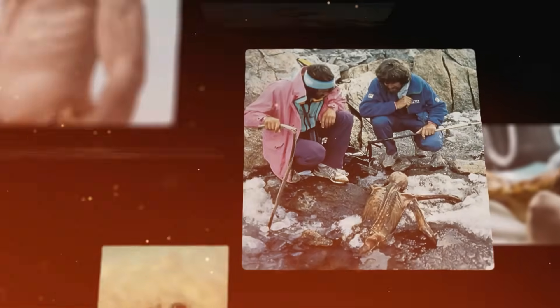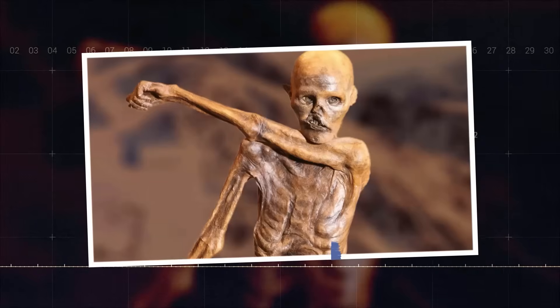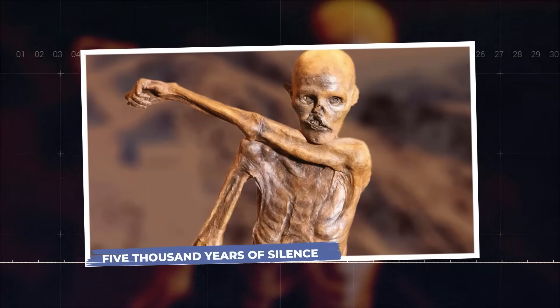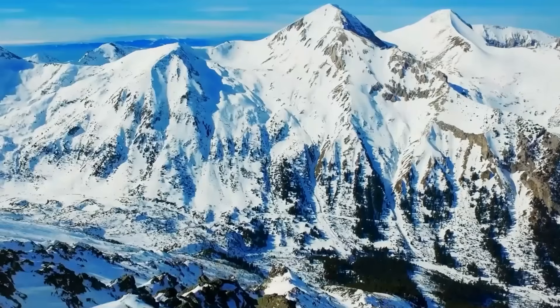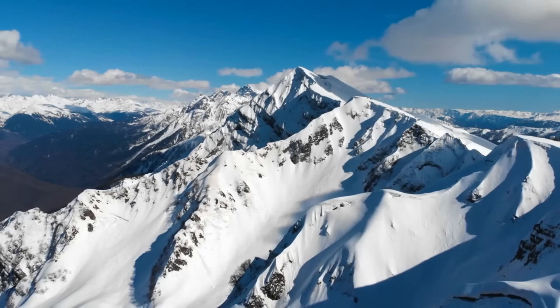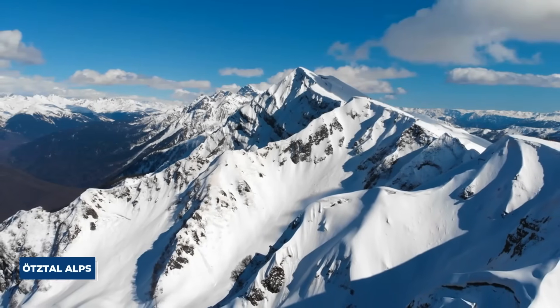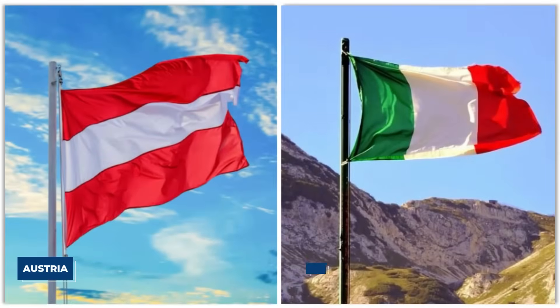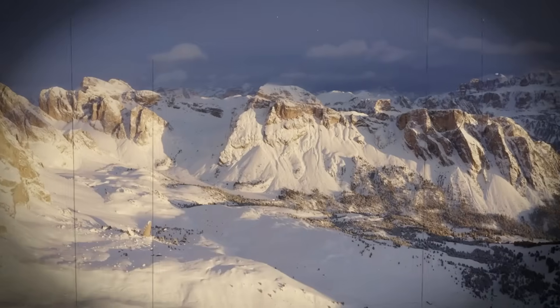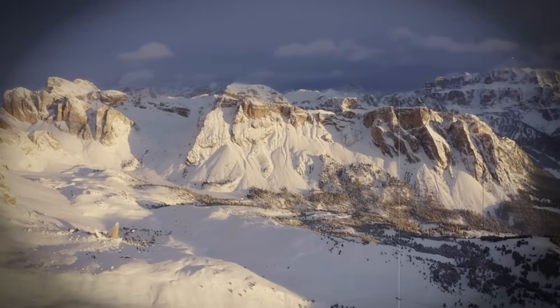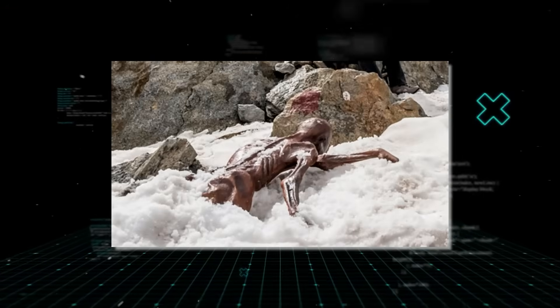The real Ötzi is finally here. 5,000 Years of Silence. On a crisp September day in 1991, something happened that would change archaeology forever. It started as just another mountain hike for two German tourists, Helmut and Erika Simon. As they made their way through a rugged pass in the Ötztal Alps, on the border between Austria and Italy, the late summer sun had melted the ancient glacier just enough to reveal something unbelievable.